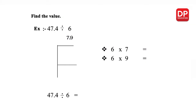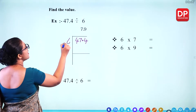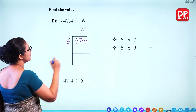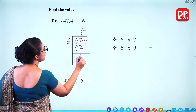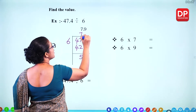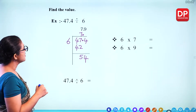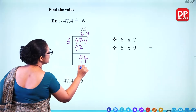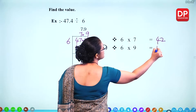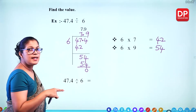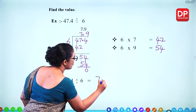For 47.4 divided by 6: this is the number to divide and 6 is the divisor. How many 6s for 47? That is 7 — 6 times 7 is 42, remainder 5. Put the decimal point in the column. Take 4: for 54, how many 6s? 6 times 9 is 54, remainder 0. So 47.4 divided by 6 is 7.9.